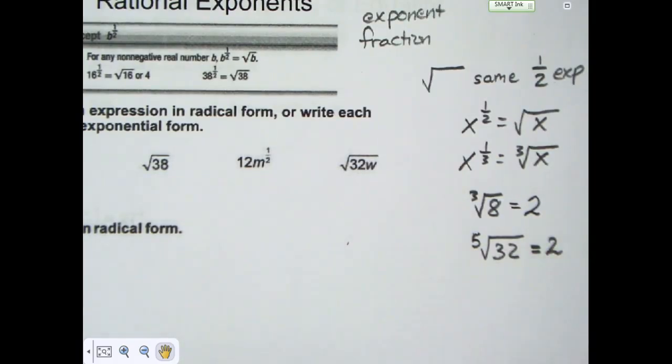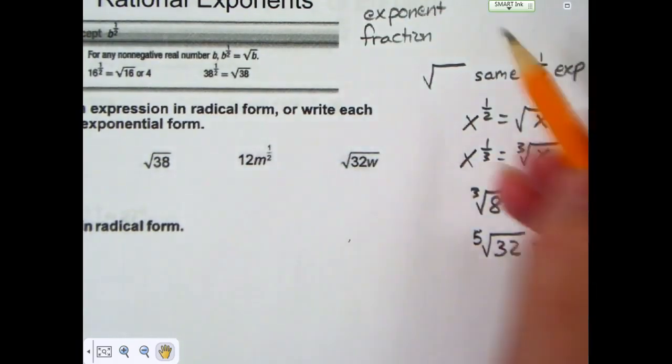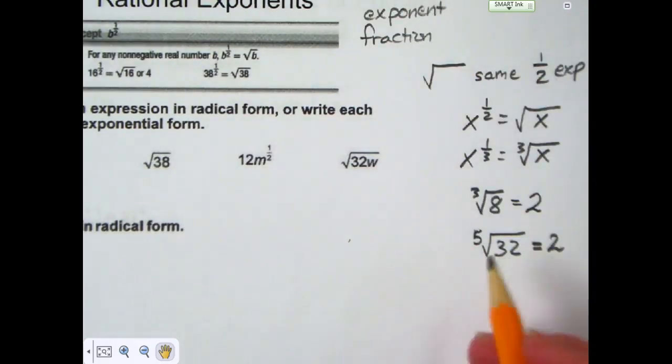Now this fifth root of 32—I want you to understand what this rational exponent is saying. Instead of doing the fifth root of 32, I could show it as 32 to the one-fifth power. That's the same thing. The denominator value is the root that you're looking for.